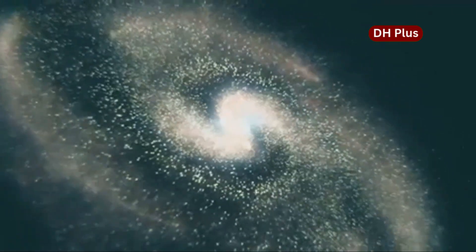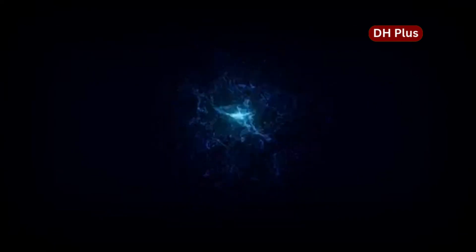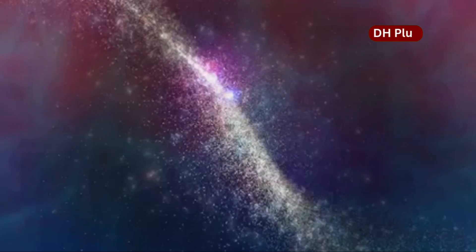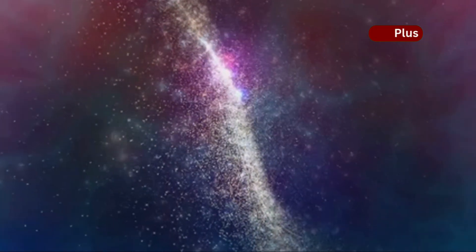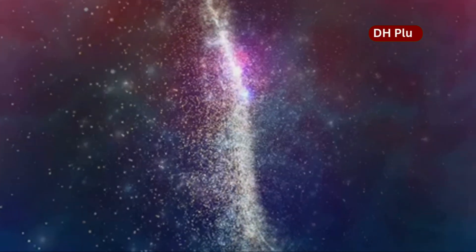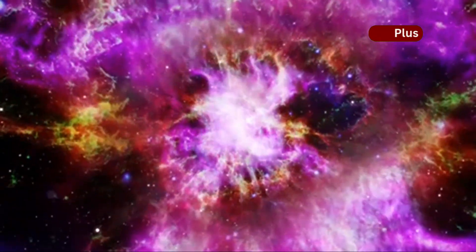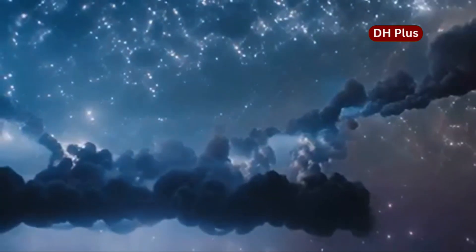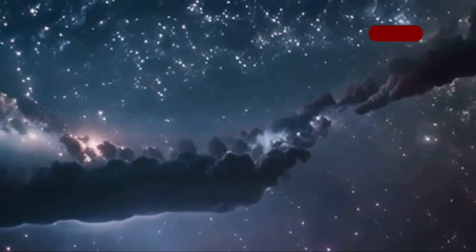In trying to explain these gravitational anomalies, one theory has slowly moved from the fringes of speculation into the realm of serious discussion. What if dark matter, long thought to be inert and invisible, actually carries information? Not data in the digital sense but something more primal, a kind of cosmic memory. Across multiple James Webb observations, scientists have noticed galaxy clusters forming in arrangements that seem to echo older structures observed in distant parts of the universe. What if dark matter retains imprints of ancient cosmic events and guides the formation of new galaxies based on those long-forgotten alignments?